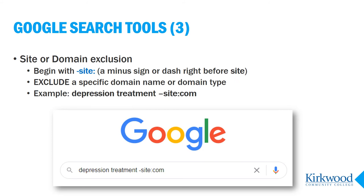There's another way to use the site limit, which can be very helpful. Instead of requiring results to be from a certain domain, you can exclude a certain domain. We use this most often to exclude .com sites from results.